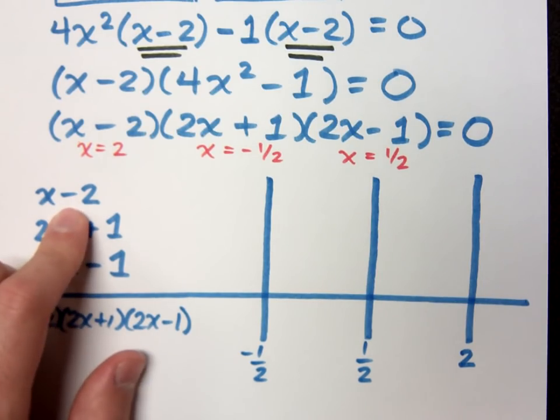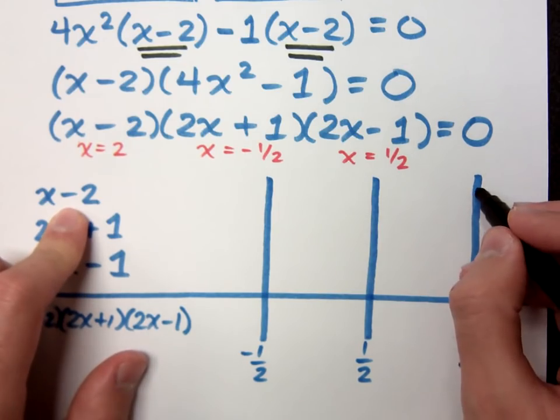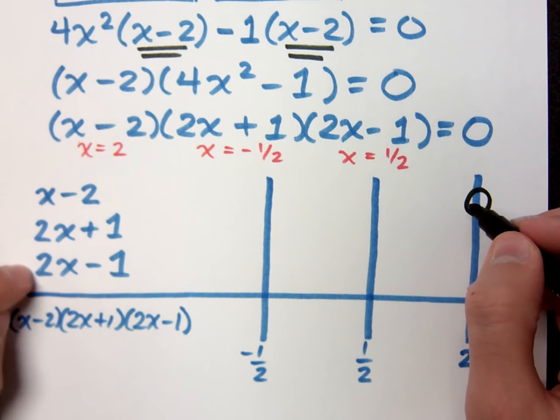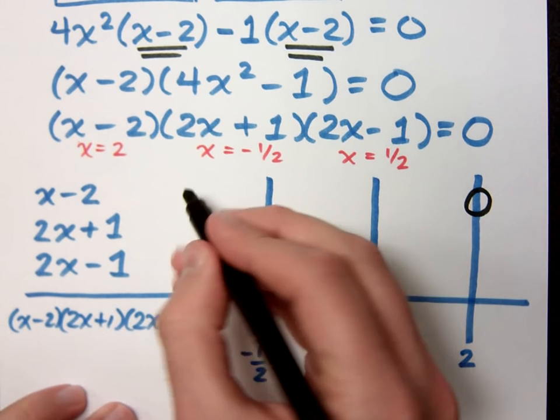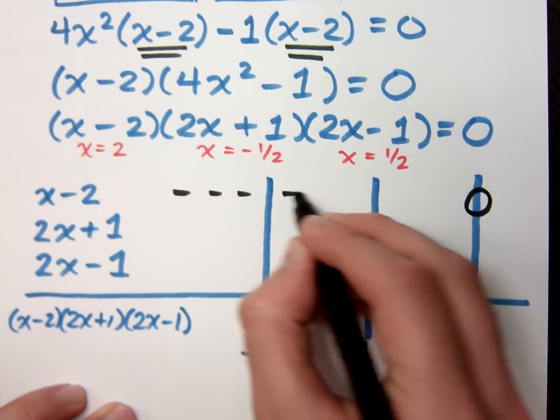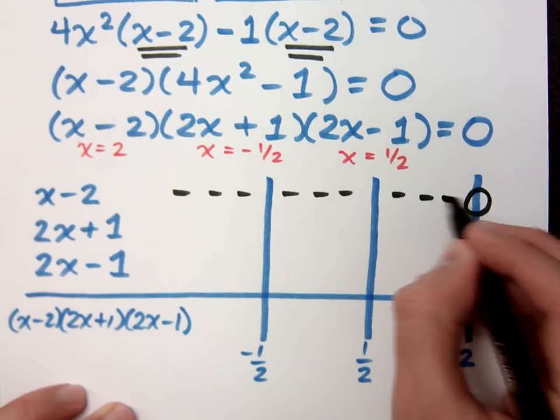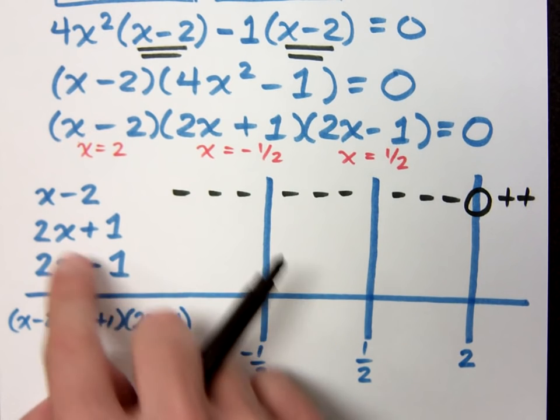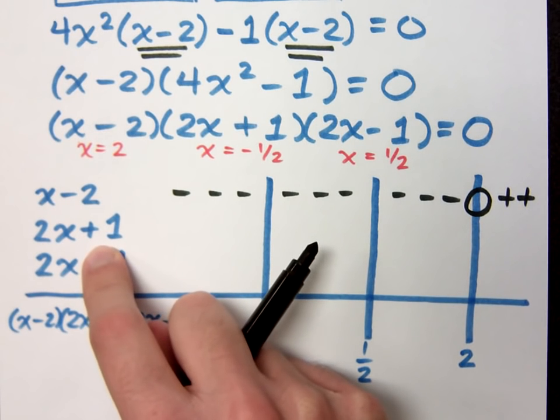When you have x minus 2, his gatekeeper is over here at 2. Notice how all of these guys have positive lead coefficients, which means on the left side of their gatekeepers, they will be negative, and on the right side they will be positive. 2x plus 1, what's his gatekeeper?